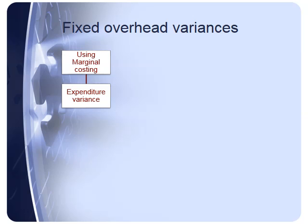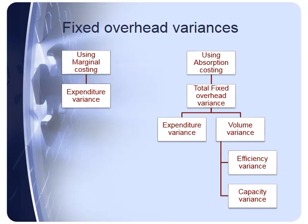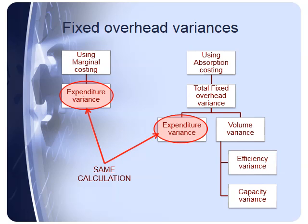With absorption costing, however, the situation is more complicated. With absorption costing we do include an element of fixed overheads in each unit's cost. As a result, we can have variances resulting from different amounts that we spend on overheads, as well as variances caused by the fact that we're producing more or less than our original budget. So we have expenditure variances, volume variances, and those volume variances can sometimes be split further into efficiency and capacity variances. It's worth noting that in both cases, whether marginal or absorption costing, the calculation to ascertain the expenditure variance is exactly the same.